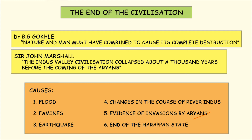Moreover, several archaeological findings also provide proof of genocide of the Harappan people. Unburied skeletons were found at Mohenjo-daro, and autopsy revealed that these skeletons were destroyed by sharp objects and weapons. The use of iron during this period was known only to the Aryans and not to the Harappan people.